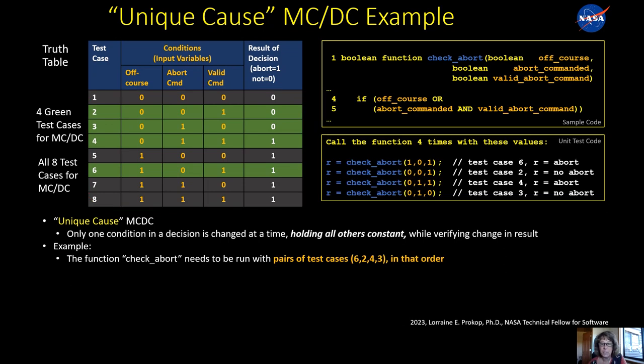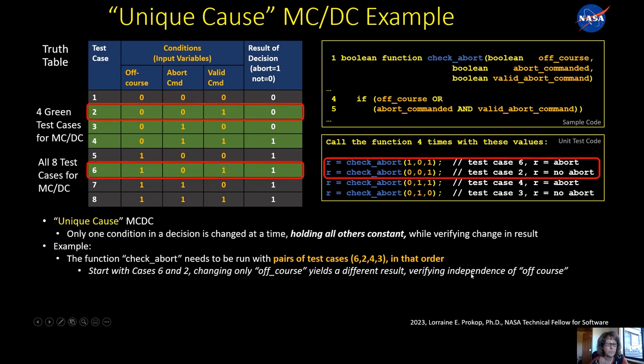So here's an example. This represents four times that you would have to call this function and what values you'd have to pass in to fully MCDC test this function. What you really need to do is exercise pairs of tests: first six and two, then two and four, then four and three. So you start with six and two. In those two cases, only off_course changed and the result also changed. So by testing those two in a pair, you verify that off_course independently affects the outcome.